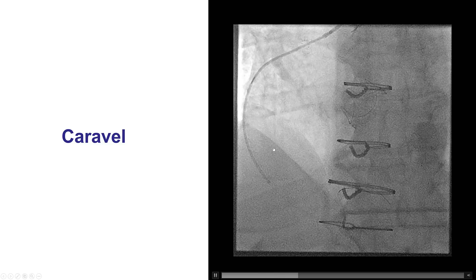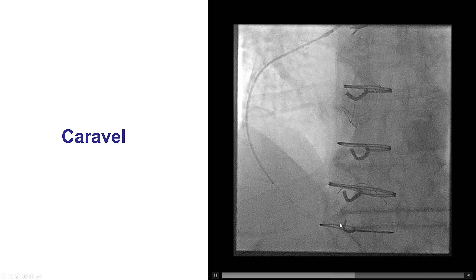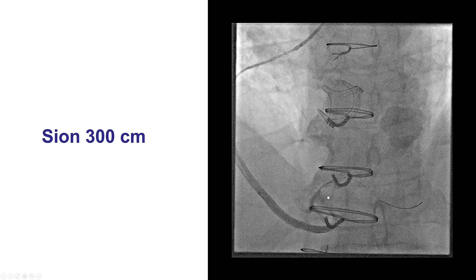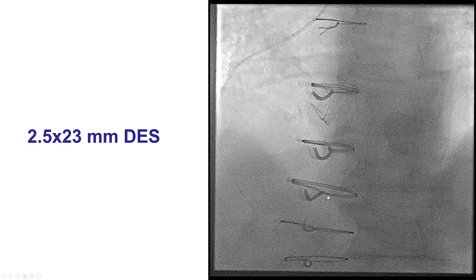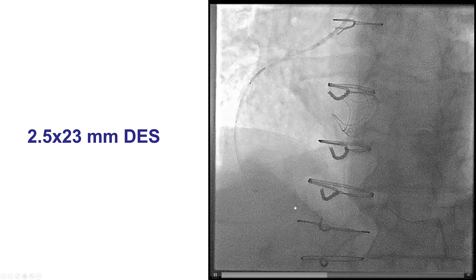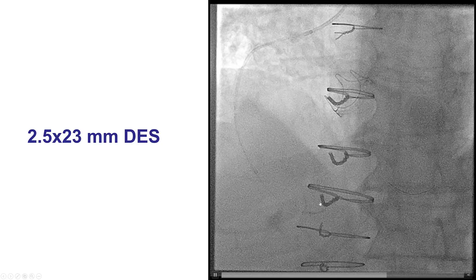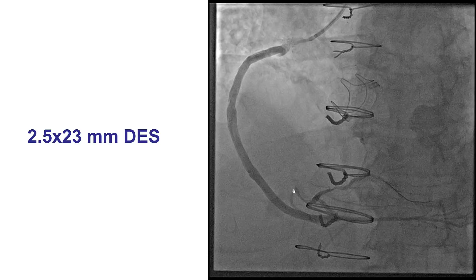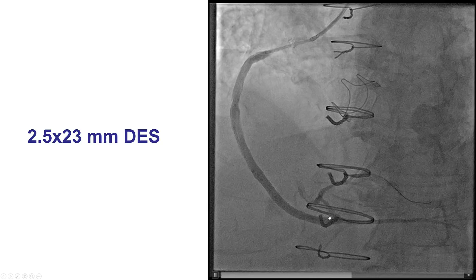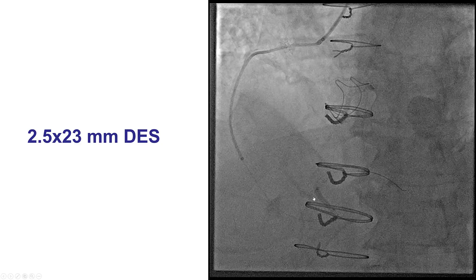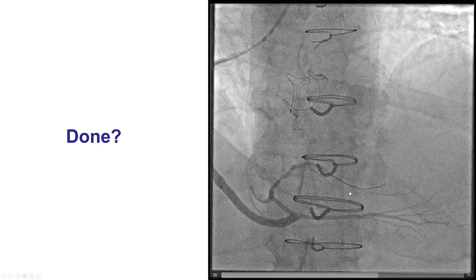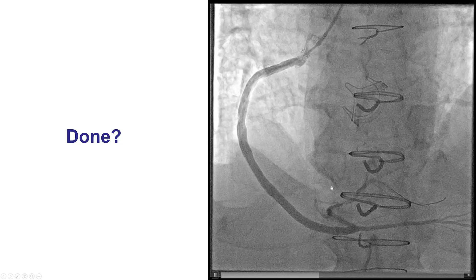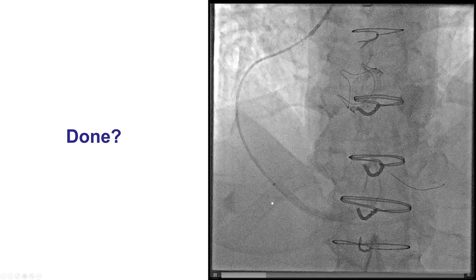The wire was confirmed to be out — likely a dissection plane. We advanced a Caravel microcatheter once more and changed to another long Sion guidewire, confirming good position. There was residual disease more proximally, so we delivered an additional 2.5 by 23 mm drug-eluting stent to cover the proximal part that was likely injured from prior balloon inflations. That stent was positioned in the proximal PDA, proximal to the touchdown of the saphenous vein graft, and successfully deployed.